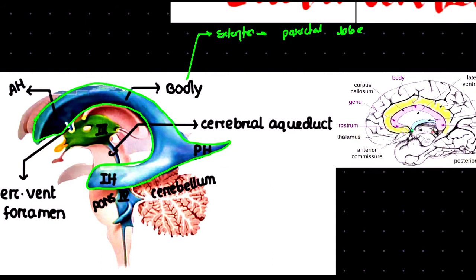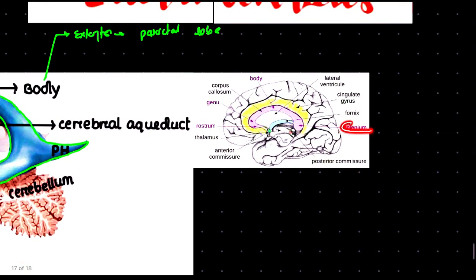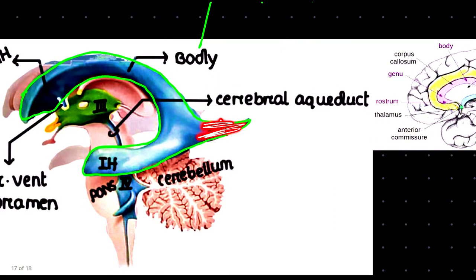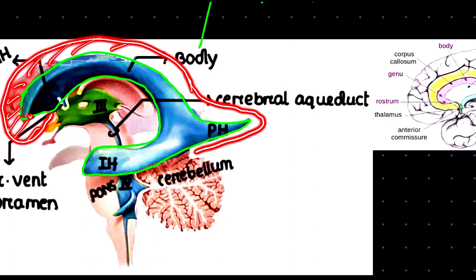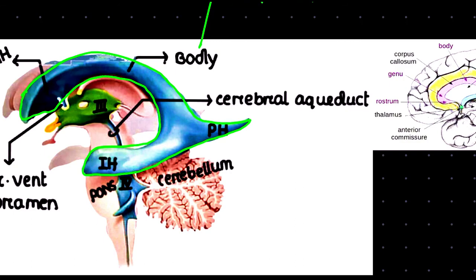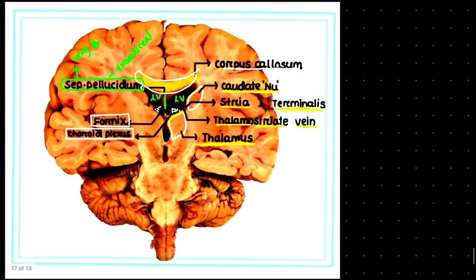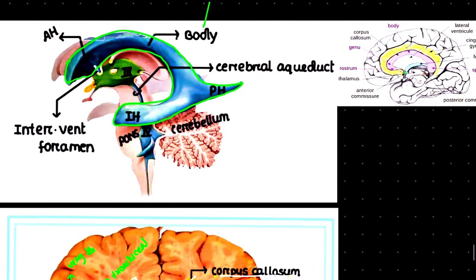The posterior horn is the cavity of the occipital lobe and lies behind the splenium of the corpus callosum. Its roof is formed by the corpus callosum. The inferior horn is the largest horn and is the cavity of the temporal lobe.